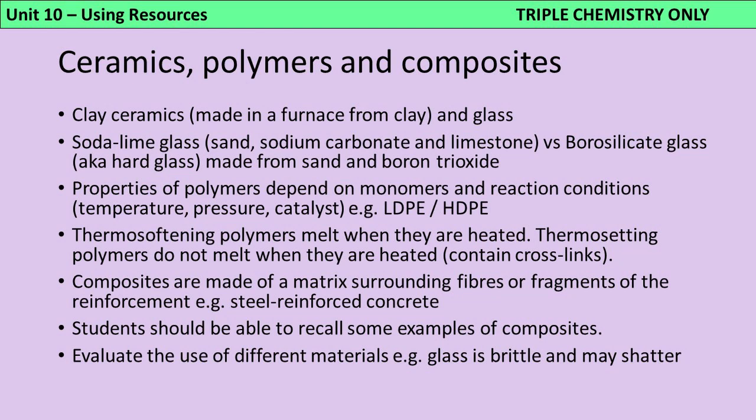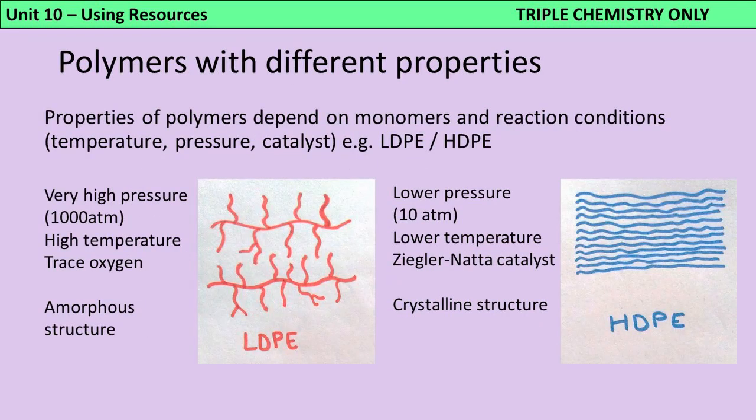Polymers came up in Unit 2, but now we need more detail. These very long chains of repeating units called monomers can have different properties — like different melting points, densities, or flexibilities — depending firstly on the monomer they're made from, and also on the reaction conditions: temperature, pressure, and catalyst. For instance, low density polyethene (LDPE) is made under incredibly high pressure and fairly high temperature, with a tiny bit of oxygen as a catalyst. When the polymer forms, it makes branches that stop the chains packing tightly together — this is called an amorphous structure.